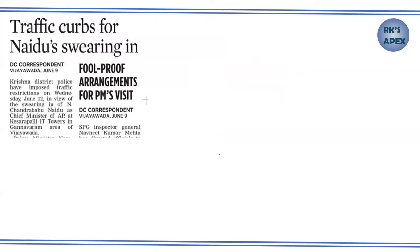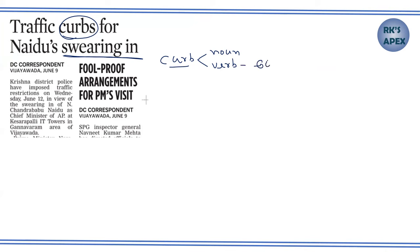The next word: 'Traffic Curbs for Naidu Swearing In.' Swearing In means taking oath — Pramana Svikara. Traffic Curbs — CURB. In terms of traffic, curbs means restrictions. So traffic curbs means traffic restrictions imposed for Naidu's swearing-in ceremony.